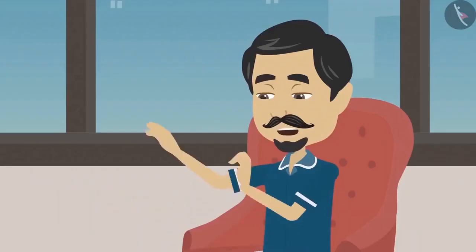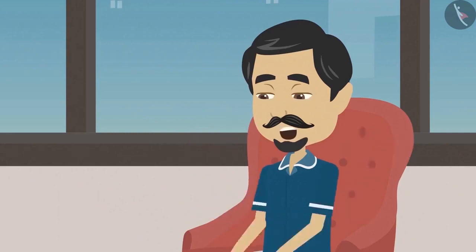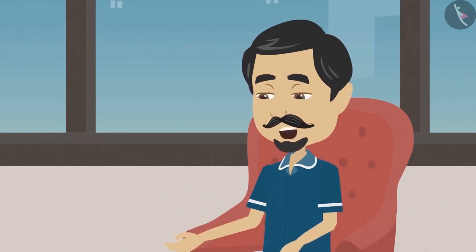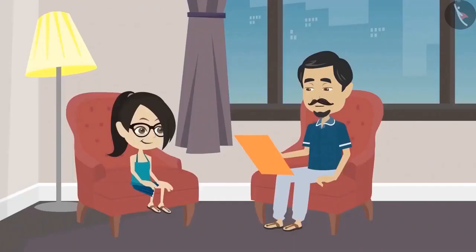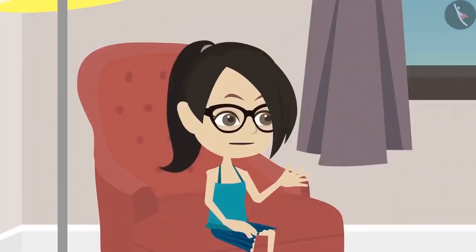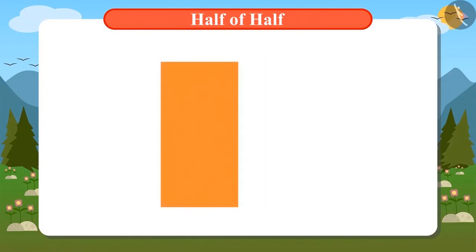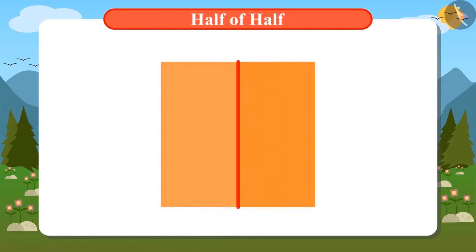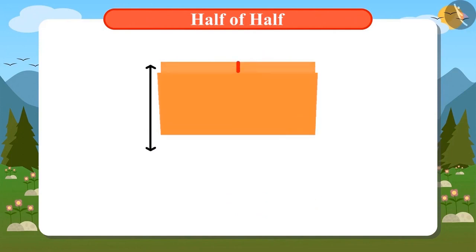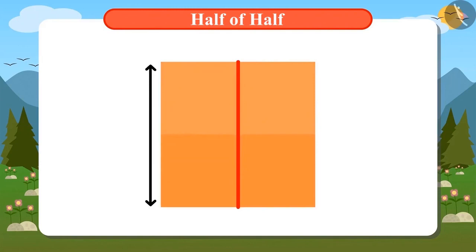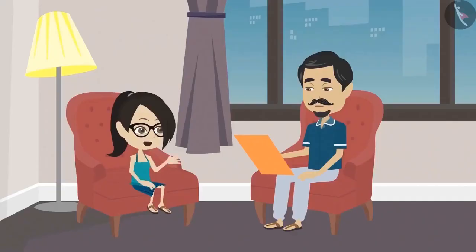Divide the field in some other ways different from yesterday and then I will understand. Look, we need to plant one crop in one-fourth part of the field. To find the one-fourth part, first we divide the field in half and then divide those halves into halves again. We got two parts by dividing into two halves. Yesterday this one half was divided one way, but we can divide it from the long side too. Tell me, Vandana — is this part one-fourth or not? This is also half of half, so this is also a one-fourth part. That means this field can be divided into four equal parts in two ways.